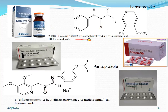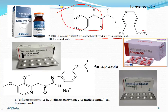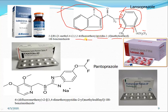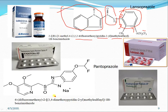Lansoprazole: the pyridine ring is substituted with a 2,2,2-trifluoroethoxy group. It contains the same methanesulfinyl linker and 1H-benzimidazole nucleus. The trifluoroethoxy group — OCH₂CF₃ — is at position 4 of the pyridine ring. This distinguishes lansoprazole from omeprazole.